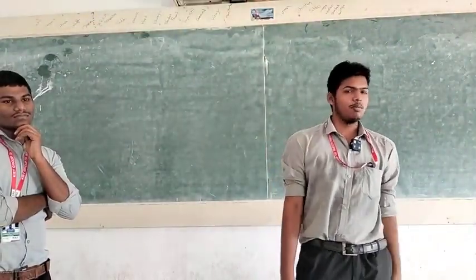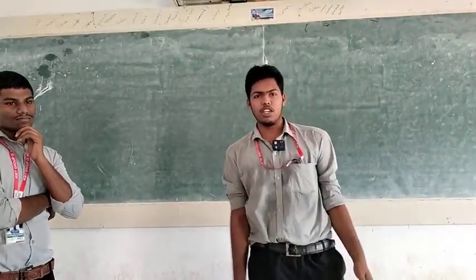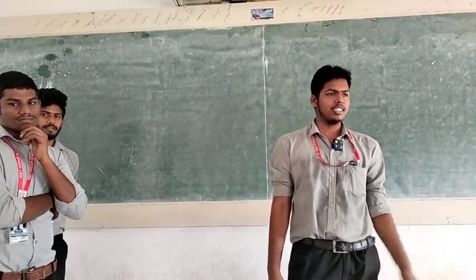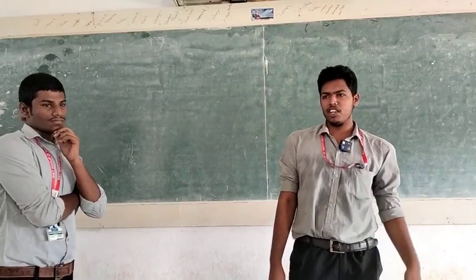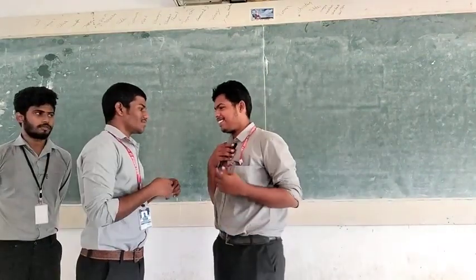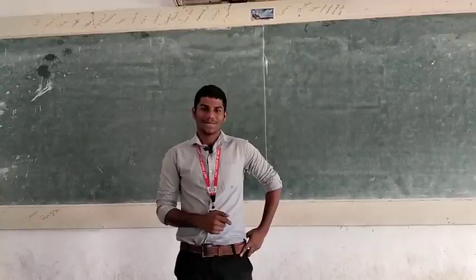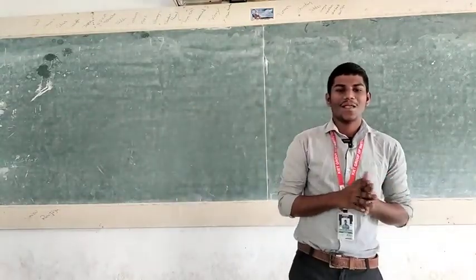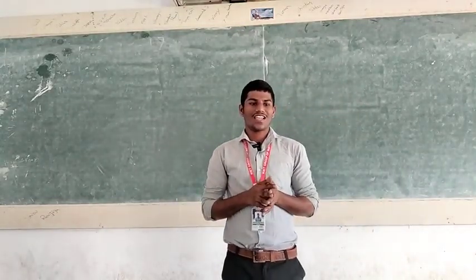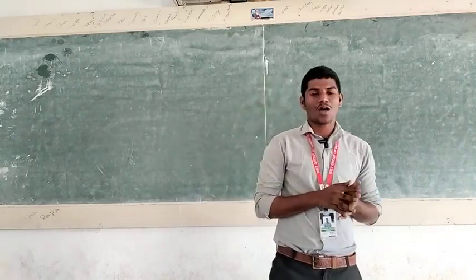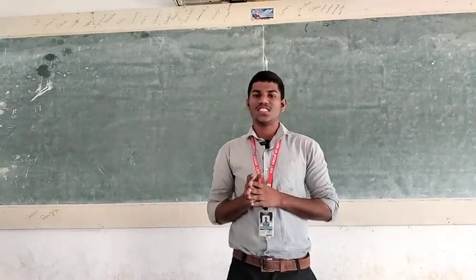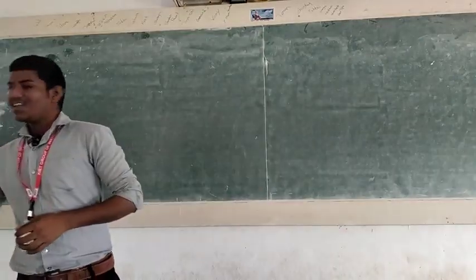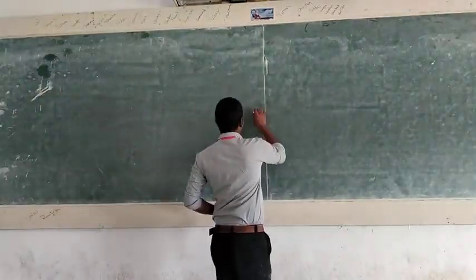Good morning everyone. I am from Team 3, and these are all of our team members in the Teach to Learn program. We are going to explain about MFCS permutations. A permutation is an ordered arrangement of elements or objects from a set of different objects. This is the formula for it.